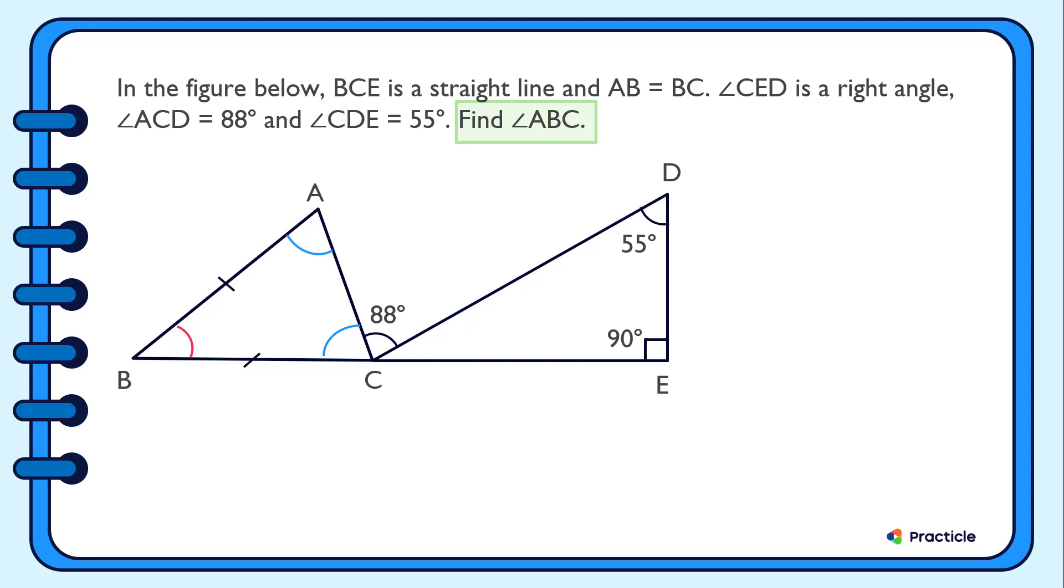We are going to start with triangle CDE. And we already know the value of two of these angles, right? So the key here is to know that the sum of all angles of a triangle add up to 180 degrees. Do you remember that?